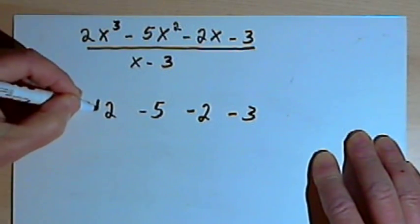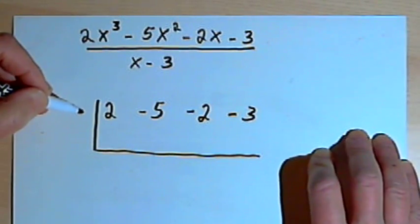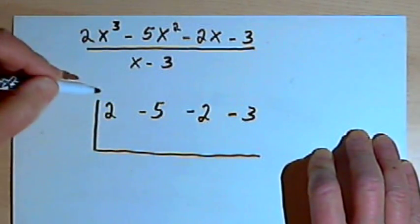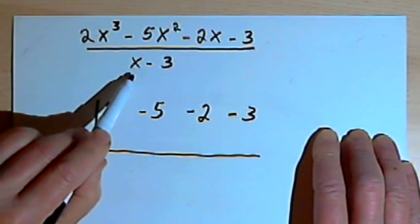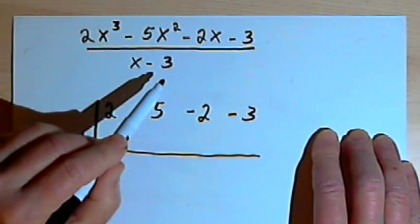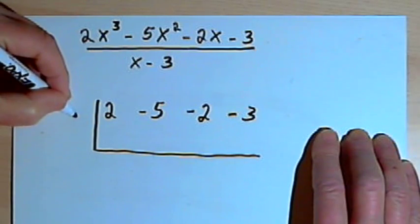I'm going to put a kind of a half box around this. Outside the box I want to put the divisor, what I'm dividing into this number. I've got this x minus 3. I'm going to disregard the x, take the minus 3 and change the sign, so that's going to be positive 3.